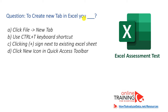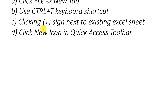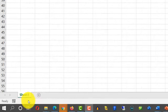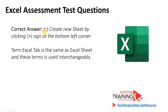To create a new tab in Excel, you click the plus sign next to the existing Excel sheet. When you open a new Excel sheet, next to Sheet 1 there is a small plus sign. You just click on it and it creates a new sheet. Keep in mind that the term 'Excel tab' is the same as 'Excel sheet' and they are used in questions and documentation interchangeably.